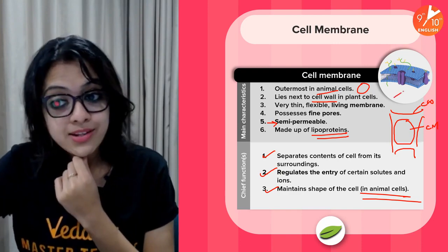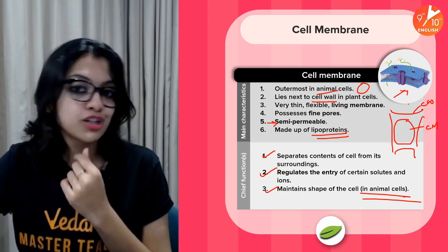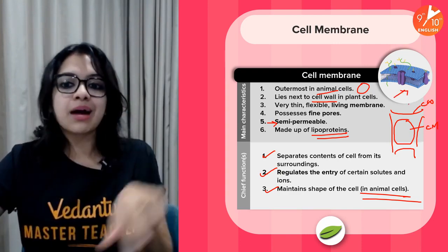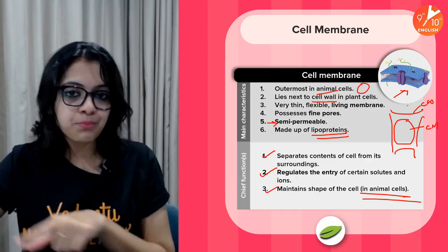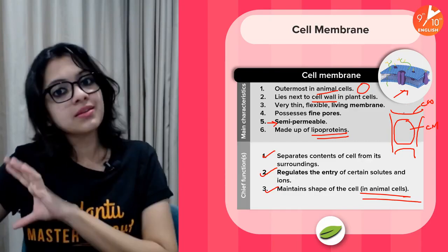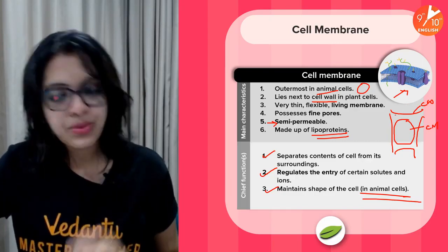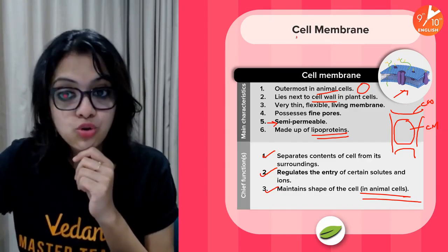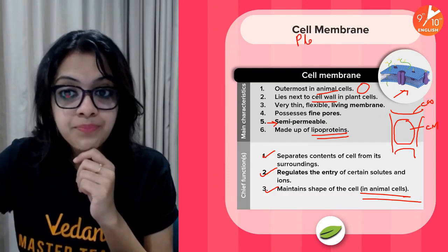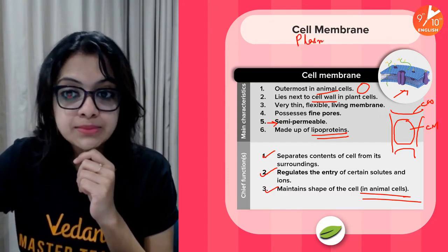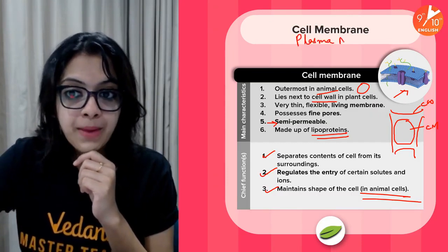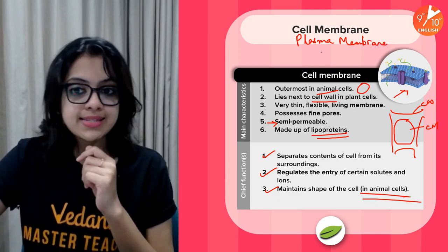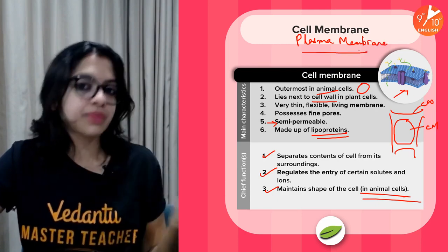The cell membrane separates the contents of the cell from its surroundings, regulates the entry of certain solutes and ions, and maintains the shape of the cell — especially in animal cells, since plant cells rely on the cell wall for shape maintenance. In a zoomed-in view, the cell membrane is a double-layered membrane in most eukaryotic cells, and we also call it the plasma membrane.